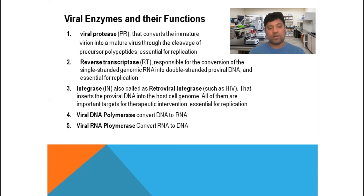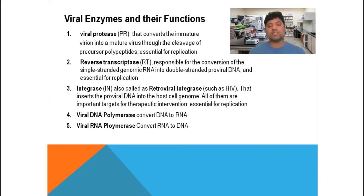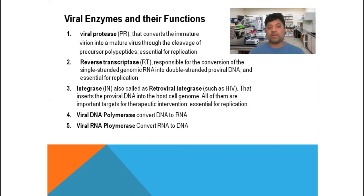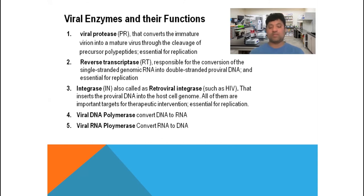If RNA viruses are unable to produce messenger RNA, it means they are unable to produce the proteins required for their life, structure, metabolism, and replication. Some RNA viruses themselves work as messenger RNA and go through the ribosome to produce the desired protein. But some viruses convert their RNA into DNA, and then the DNA produces messenger RNA to produce the desired proteins. After synthesis, they then convert back to their original RNA form. So RNA viruses can be converted into DNA, and some DNA viruses are also able to convert themselves into RNA.